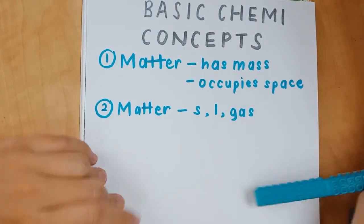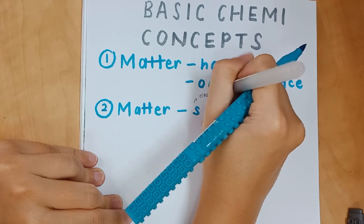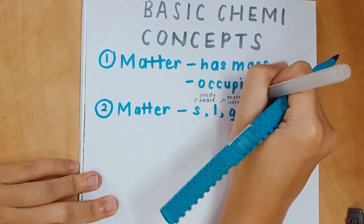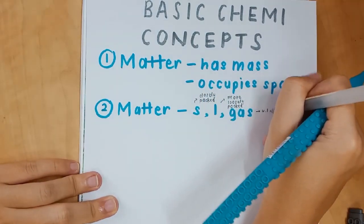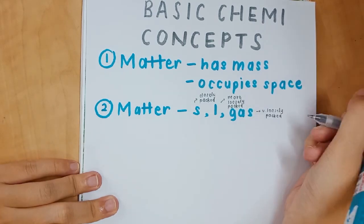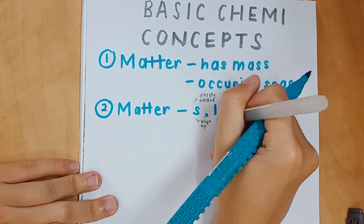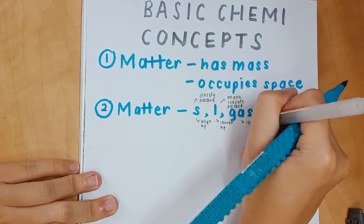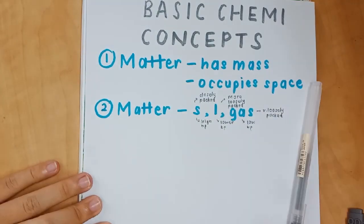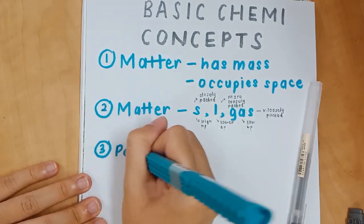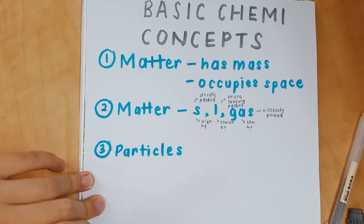You need to know about solid, liquid, and gas: their arrangement, forces of attraction, motion, melting and boiling points. For example, particles in solids are closely packed, more loosely packed in liquid, and very loosely packed in gas. Solids have high boiling points, liquids have lower boiling points, and gases have the lowest boiling points.